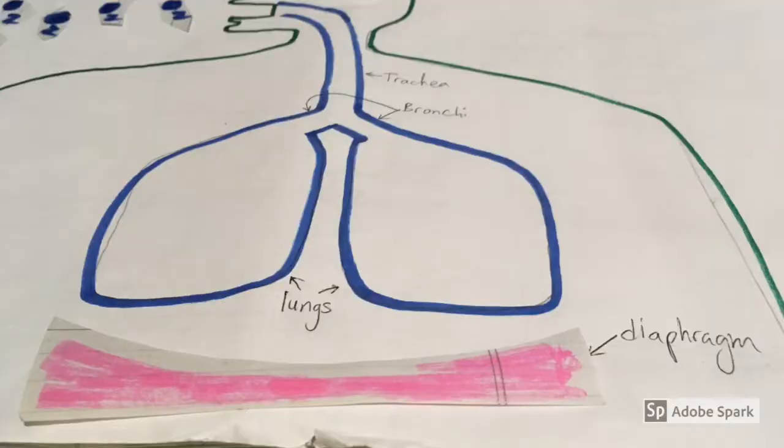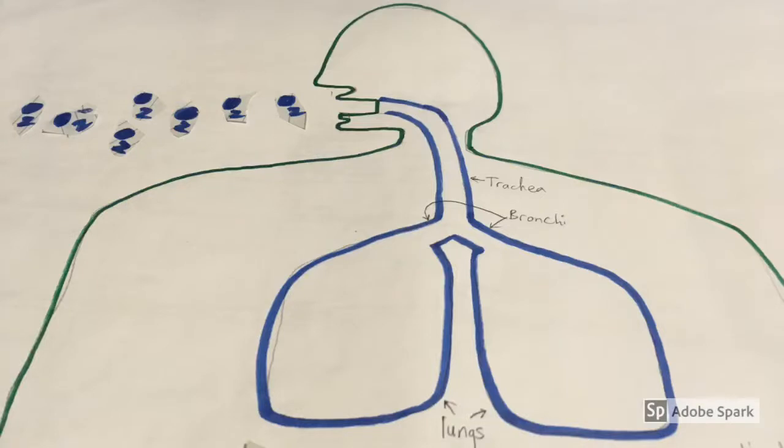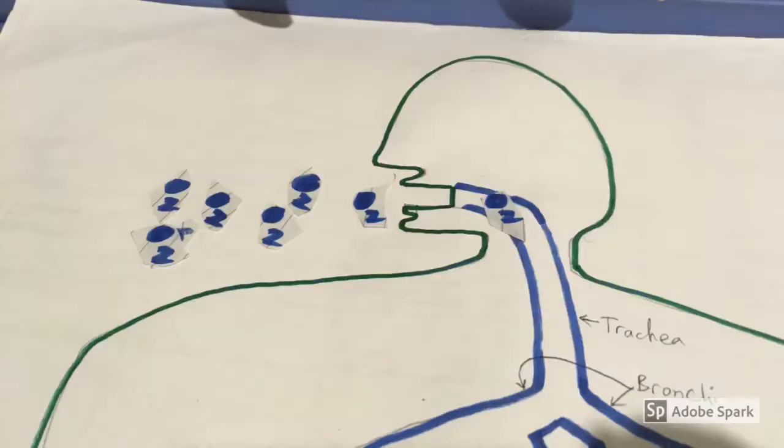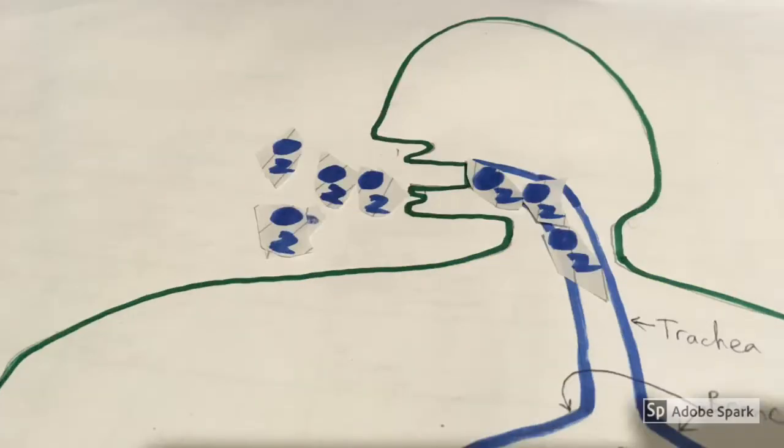When you breathe in, your diaphragm contracts and pulls down. Air molecules start to move into your mouth and into your throat. The air continues down your trachea and then eventually fills both lungs.